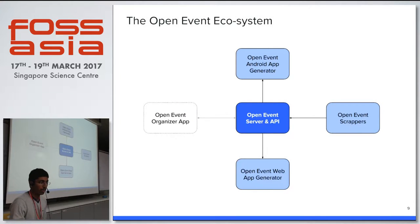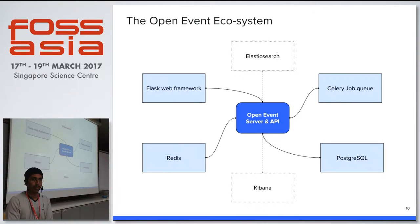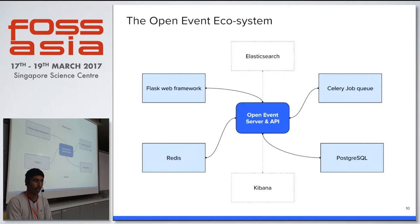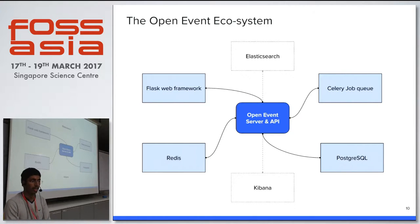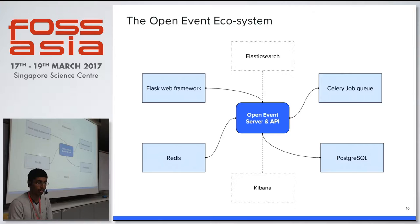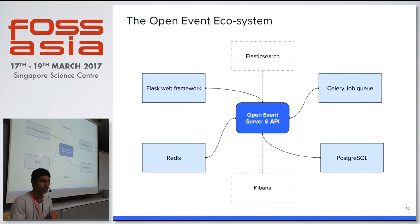The organizer app has no server component because it's going to use the Open Event server API. The Open Event server is the main part of the project — the server and API on which all the other app generators depend. For the Open Event server, we have four main components: the Flask web framework, a Celery job queue which handles import jobs, export jobs, and sending emails. Then we have PostgreSQL and Redis. And for this GSoC 2017, we have a plan of implementing Elasticsearch and Kibana for large-scale data searching and analytics.